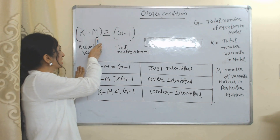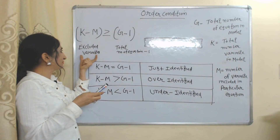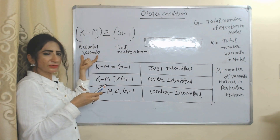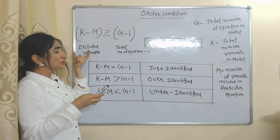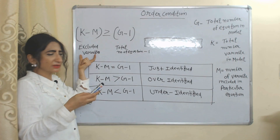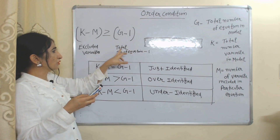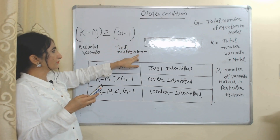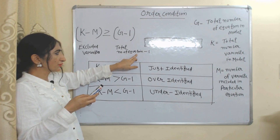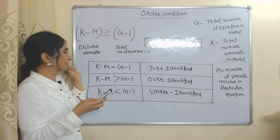When we subtract M from K, it becomes equal to the excluded variables. So this part of the equation shows excluded variables, and this part shows the total number of equations minus 1.